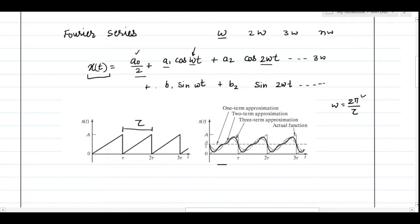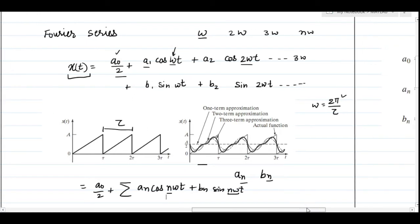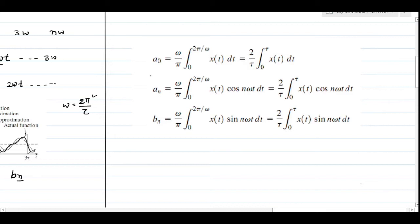If you use only one term of the Fourier series, the approximation is a straight line (the constant term). With two-term, three-term, or multiple-term approximations you get closer to the actual signal, and with all infinite terms you get back the original signal. We can generalize the coefficients as a_n and b_n, where n indicates the harmonic. The formula for x(t) is: a₀/2 + sum of [a_n cos(nωt) + b_n sin(nωt)]. The coefficients a_n and b_n can be calculated using standard formulas, but we will not solve these manually — we will directly apply MATLAB's fft command.